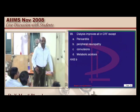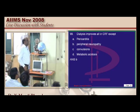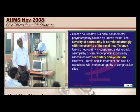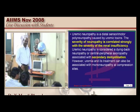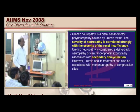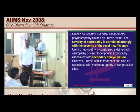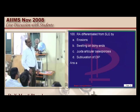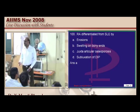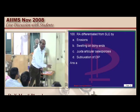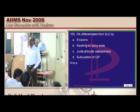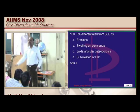Dialysis improves everything but not really peripheral neuropathy. Uremic neuropathy is a dying-back neuropathy or central peripheral axiopathy. There is segmental demyelination which is generally not reversible with dialysis. Rheumatoid arthritis is differentiated from SLE by erosions — non-erosive arthritis is SLE, erosive arthritis is rheumatoid arthritis.